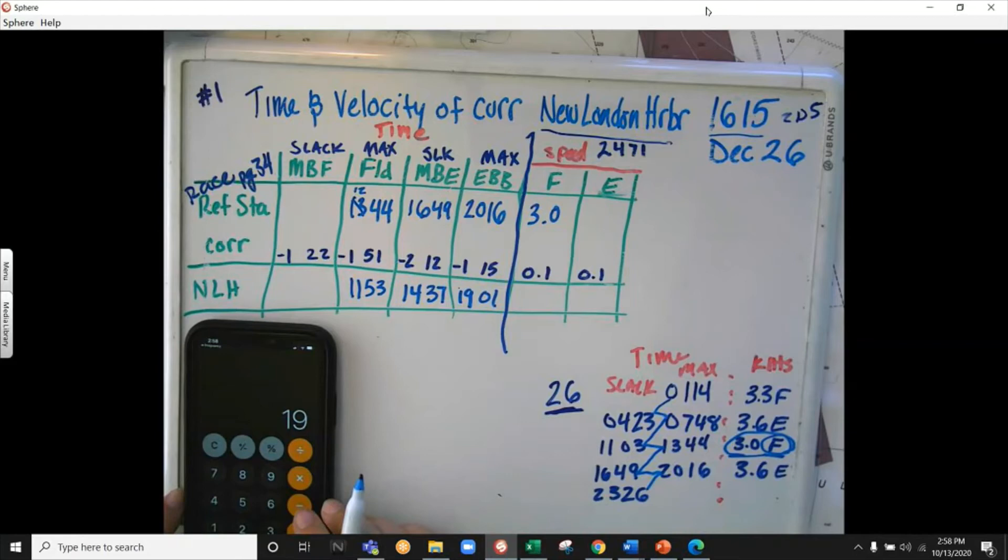Then I'm going to put this in my sandwich like I did for the other one. I'm going to erase also. We did not need to do daylight savings. If we had daylight savings time, we would be adding one hour, but our zone description is plus 5 and our time meridian was 75, so those are the same. We don't have to do that daylight savings time correction. So what we have looks good. I'm going to write it chronologically and see what we're looking for. We have 1437, that was our slack, so we have zero, and then we have 1901. We have a max ebb of 0.4 knots.